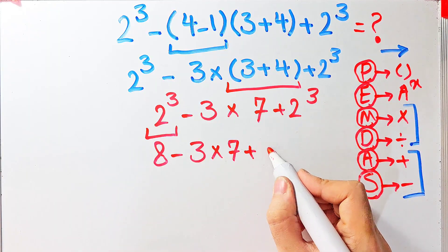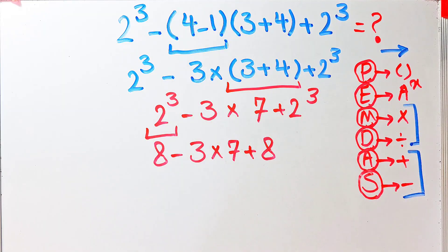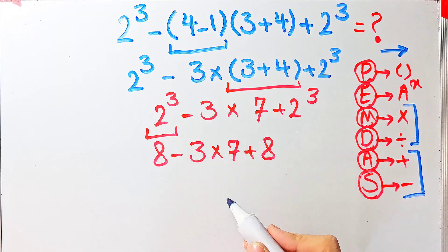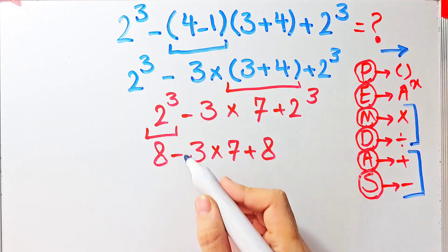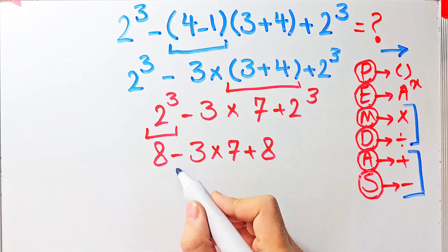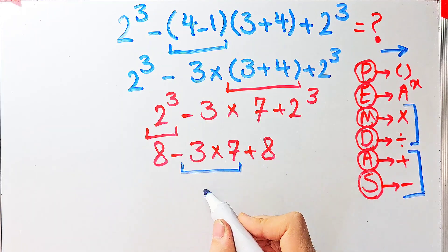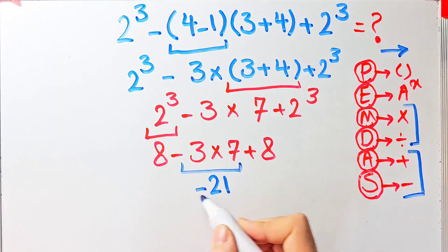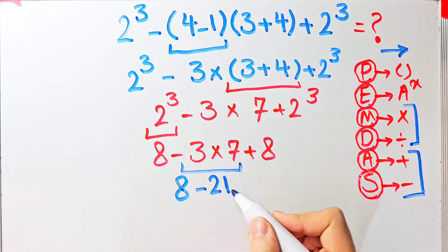In this step we have subtraction, multiplication, and addition. First we simplify the multiplication: negative 3 times 7 equals negative 21. Now the question is 8 minus 21, then plus 8.